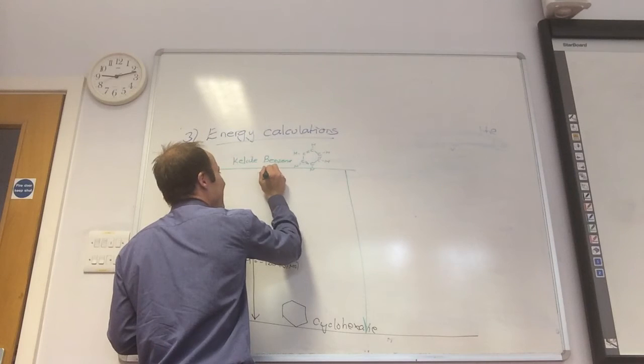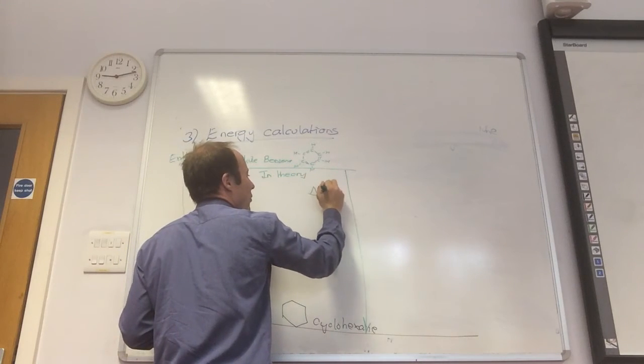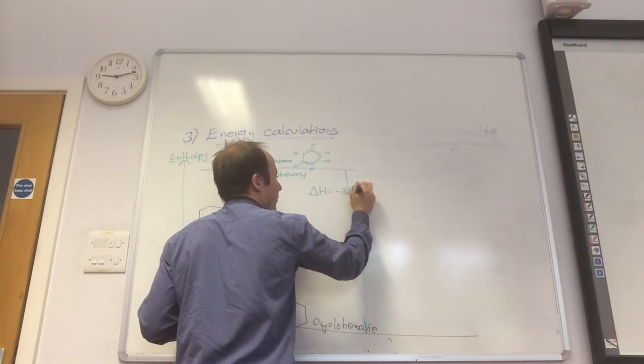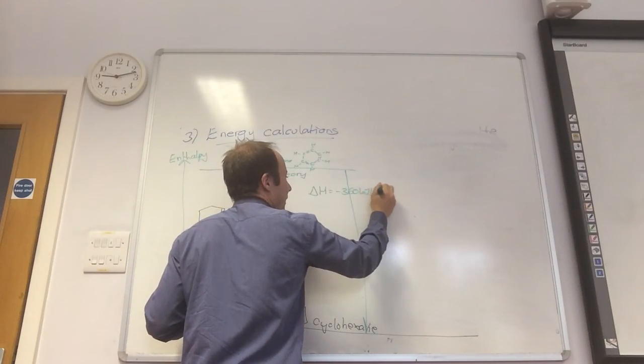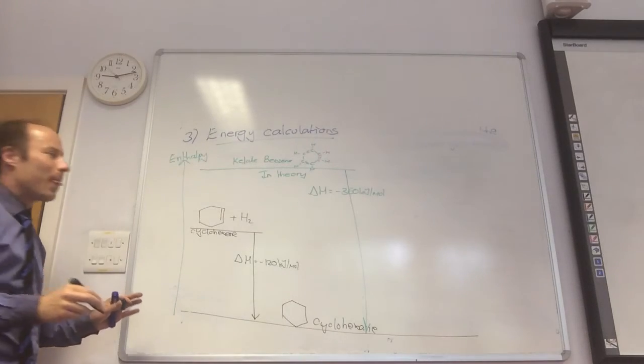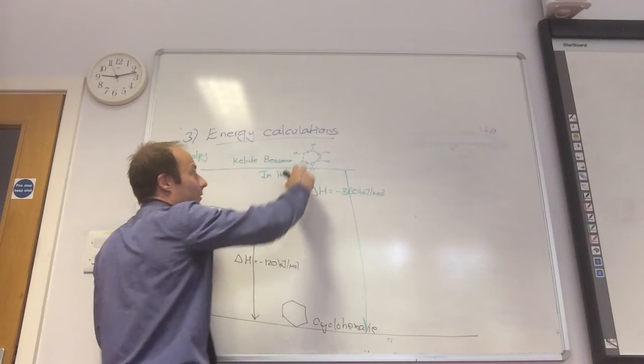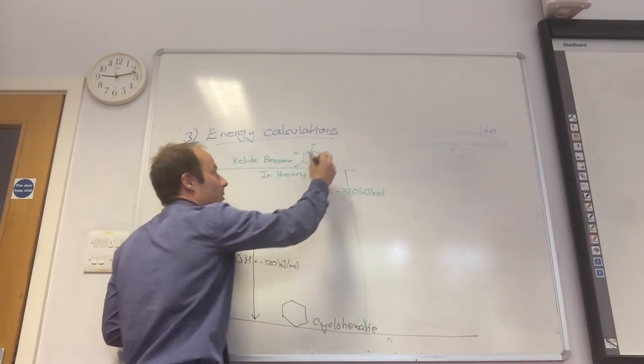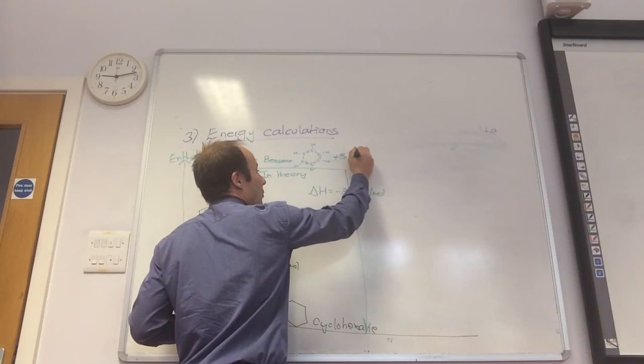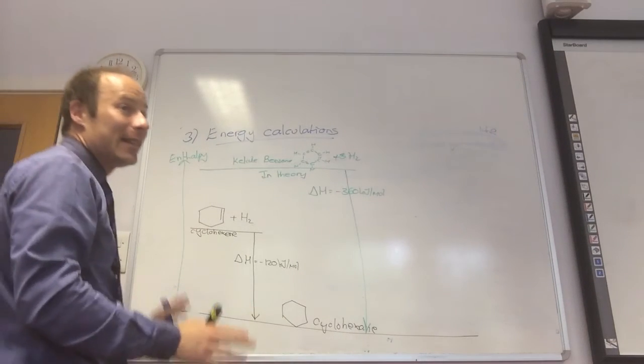So this is, in theory, delta H should equal minus three hundred and sixty kilojoules per mole. And is everybody happy with that? So this is just one double bond. I've got three double bonds, so I'm going to add three hydrogens to it. So I should times it by three. But that's in theory.